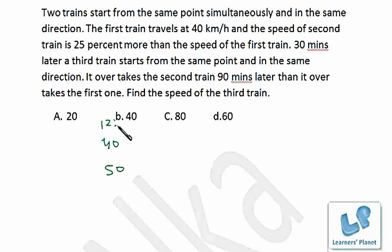I assume that they are starting at 12 o'clock. 30 minutes later, that's 12:30, the third train starts from the same point and in the same direction. It overtakes the second train 90 minutes later than it overtakes the first one. Find the speed of the third train.